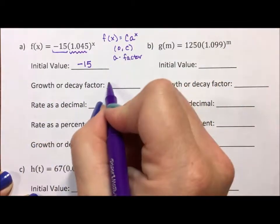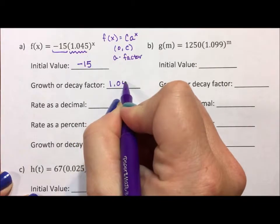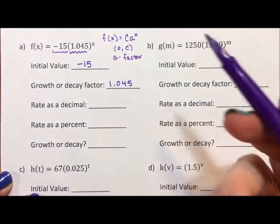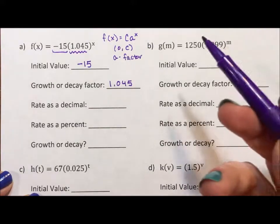And it says growth or decay factor, our factor is 1.045. It's just the two numbers that create your function.